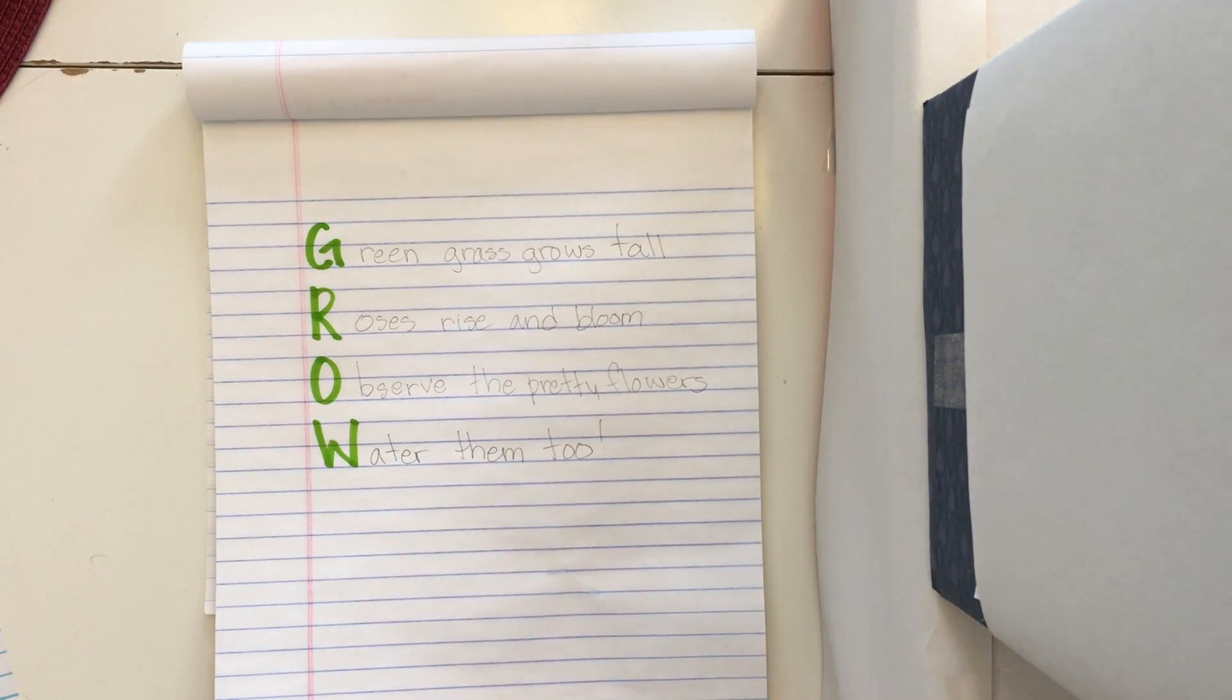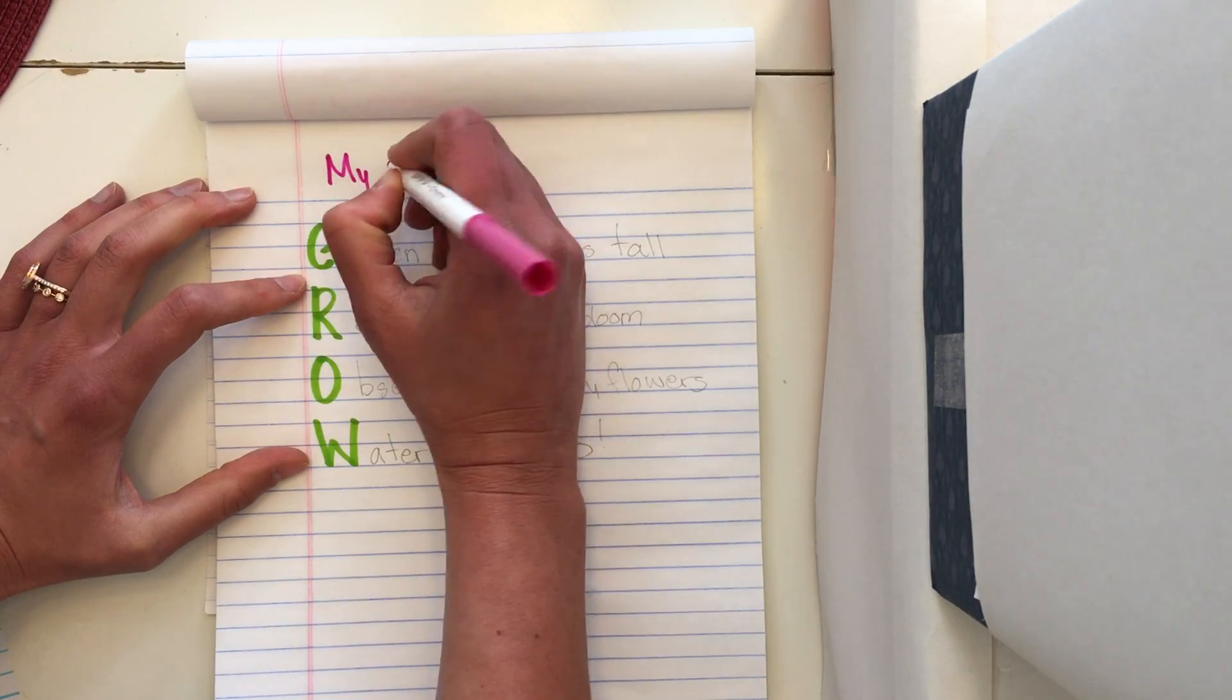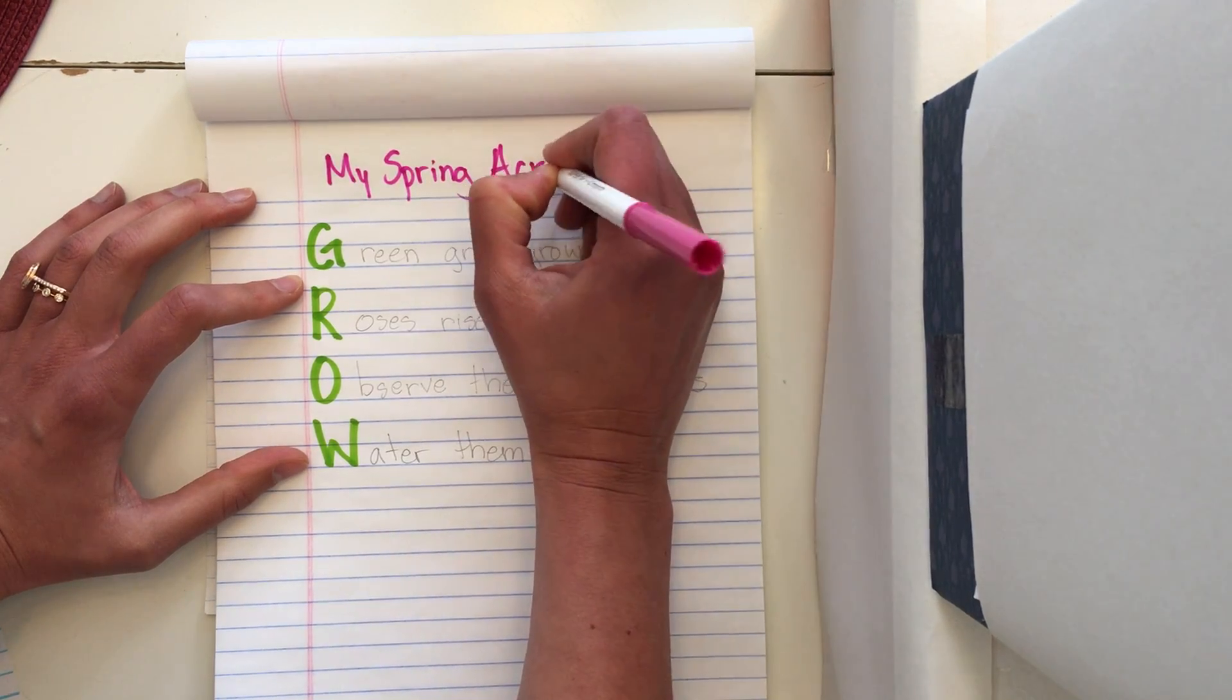All right. So let's read my acrostic poem. Green grass grows tall. Roses rise and bloom. Observe the pretty flowers. Water them too. I'm done. I have written an acrostic poem that has to do with spring. Let me do this. My spring acrostic.